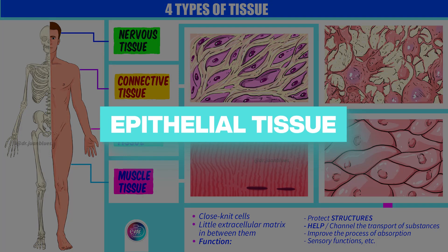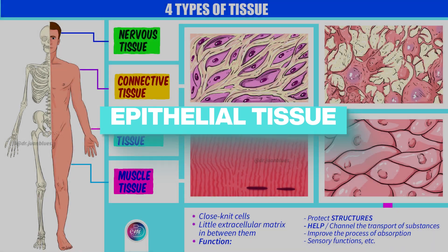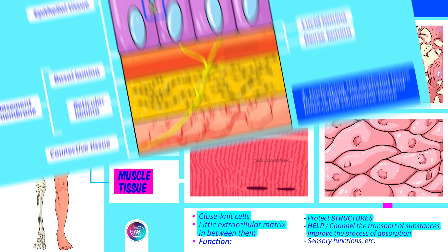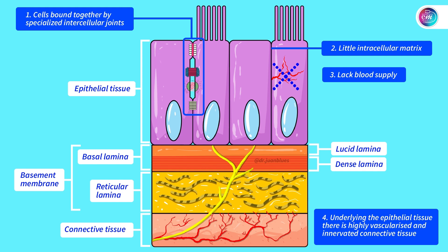Epithelial tissue is a tissue composed of close-knit cells with little extracellular matrix in between them. Epithelial cells are responsible for covering surfaces, thus achieving the purpose of protecting structures. We will also see that they line passages and therefore help to channel the transport of substances, and that they can also improve the capacity to absorb nutrients. Let's look at this process in closer detail.